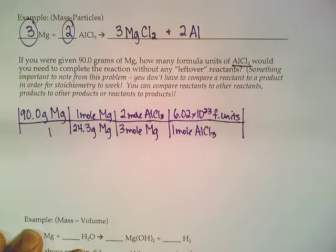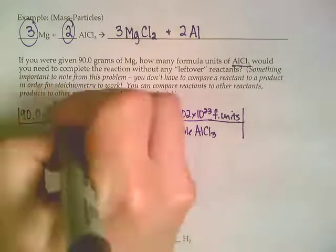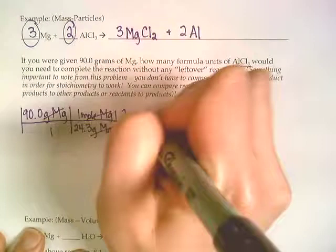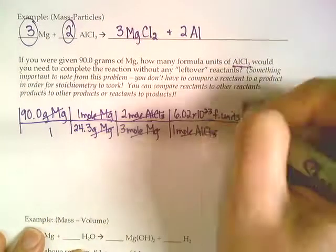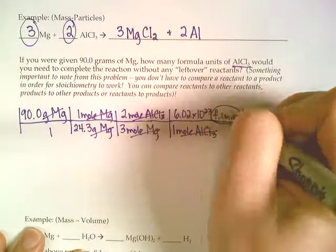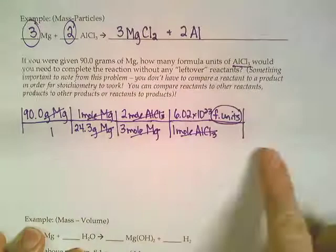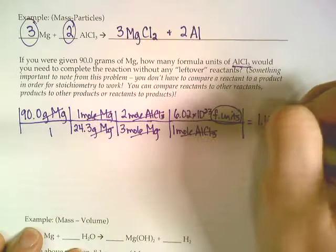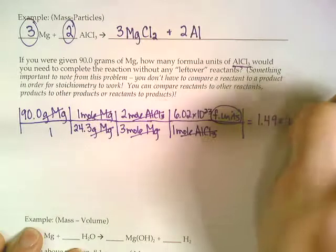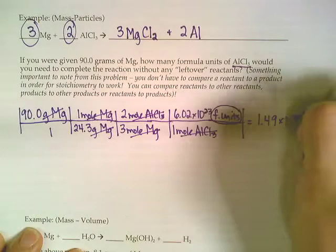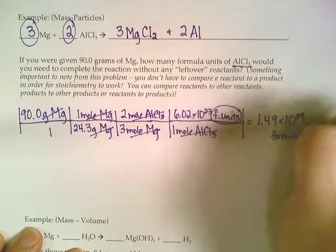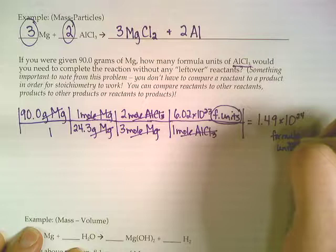And now everything's going to cancel except for those formula units. Grams of magnesium go away. Moles of magnesium. Moles of aluminum chloride. We're just left with those formula units. So we multiply across and find our answer. We would get 1.49 times 10 to the 24th formula units of aluminum chloride.